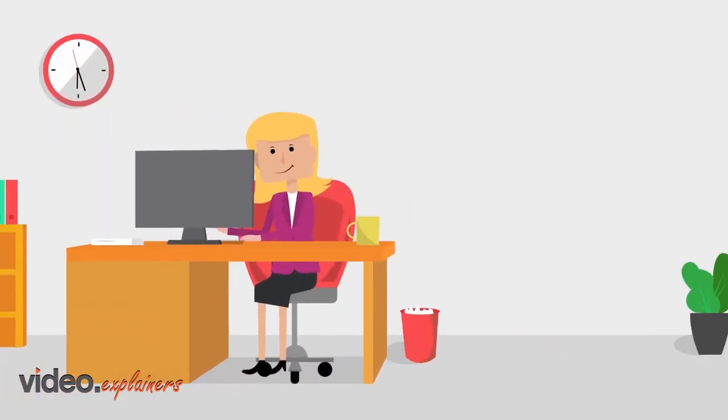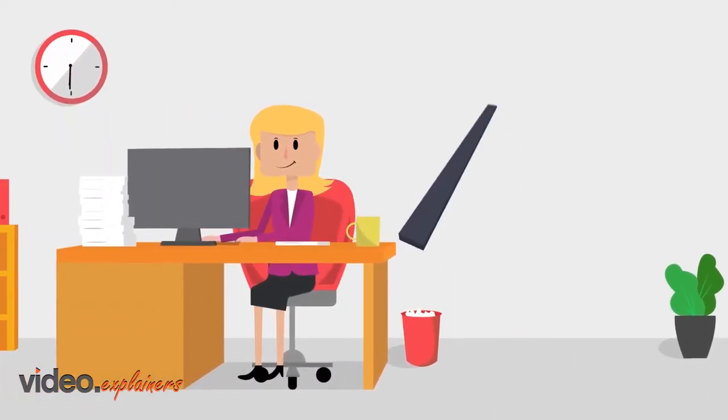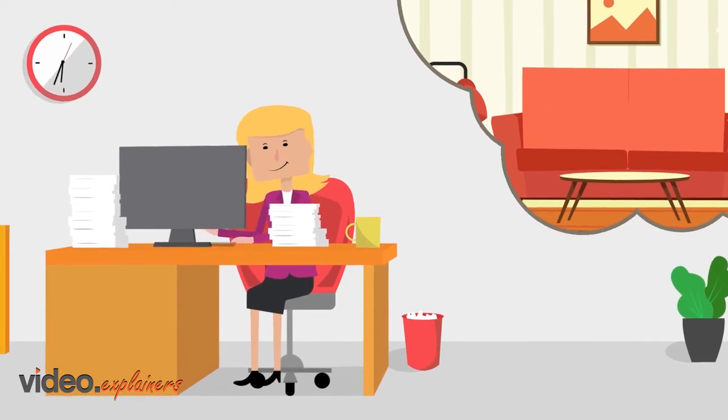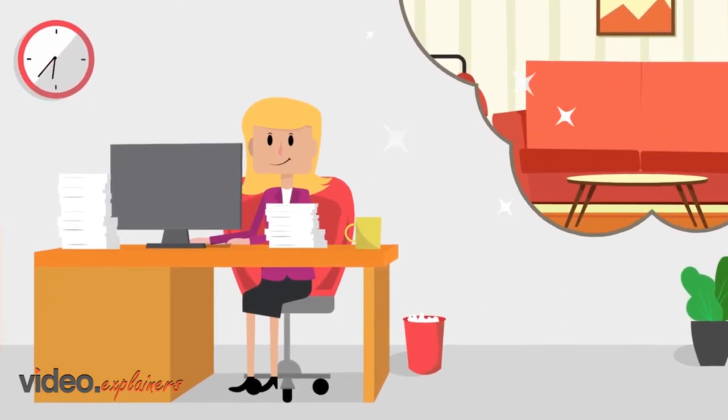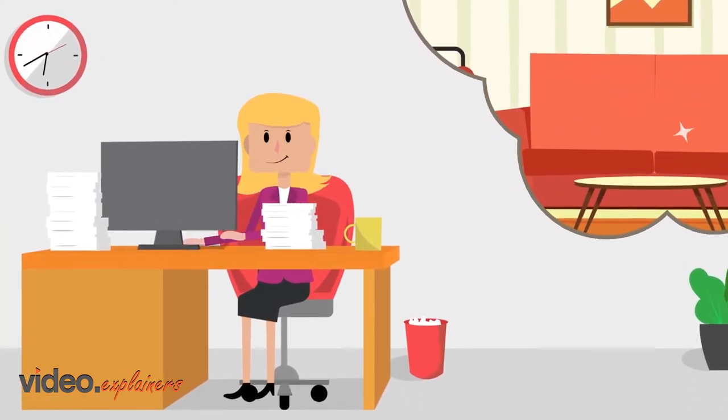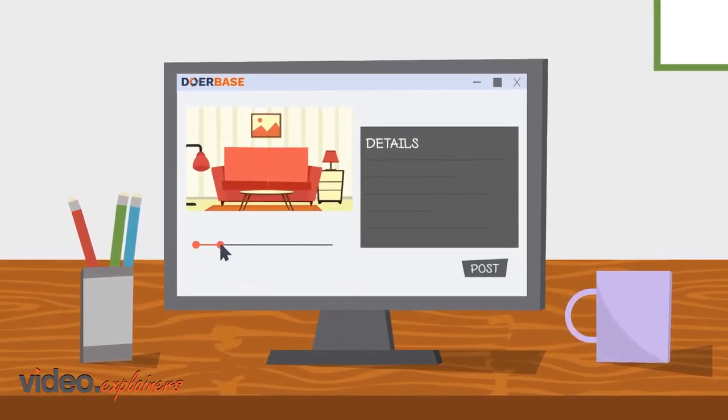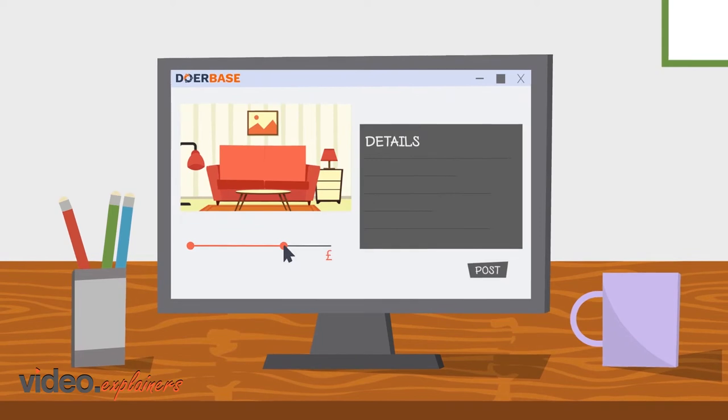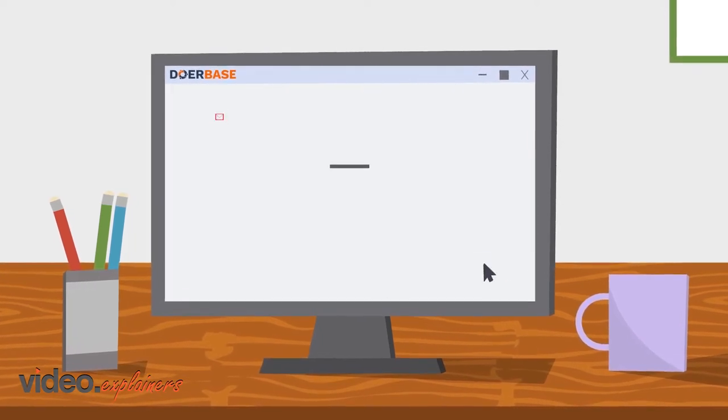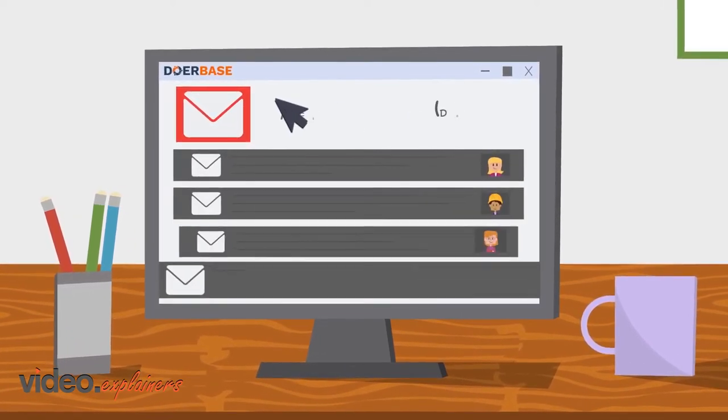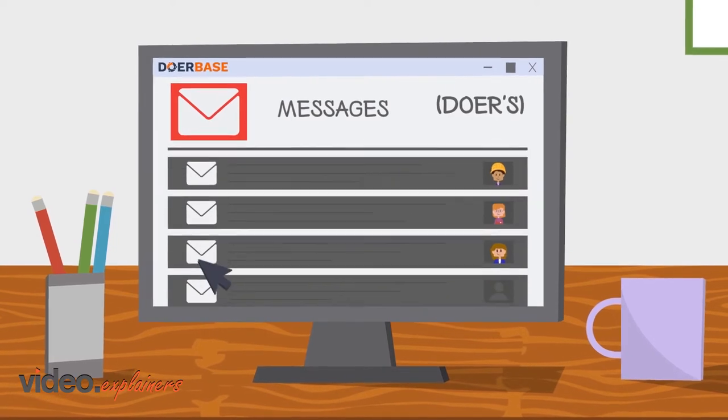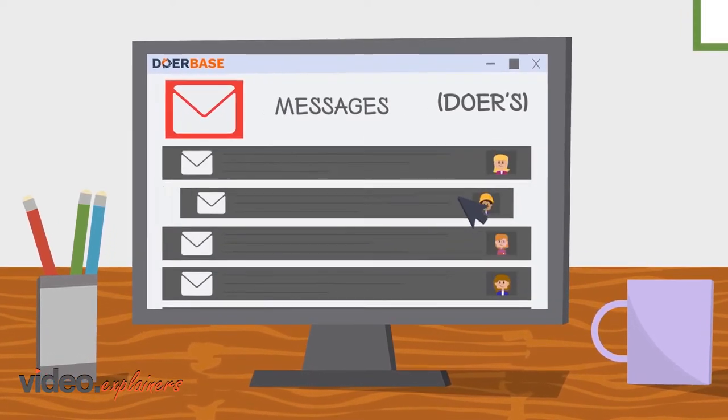Clara is a busy full-time accountant. She dreams about upgrading her living room but she needs someone who could make her wish come true. She posts a free ad on doerbase.com detailing what needs to be done within her budget. Once the task offer was up, she immediately begins to receive messages from registered doers.